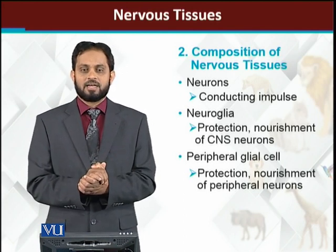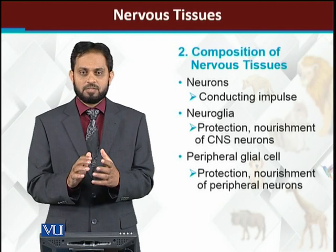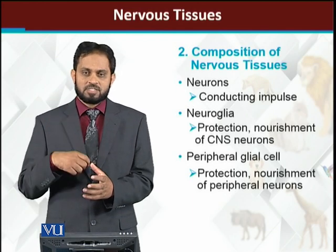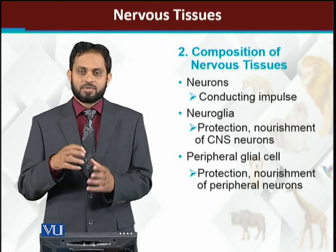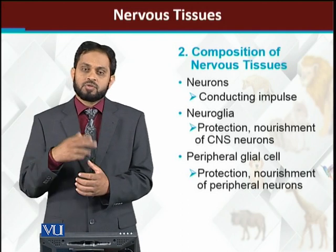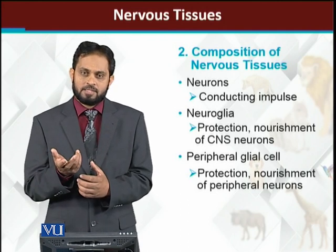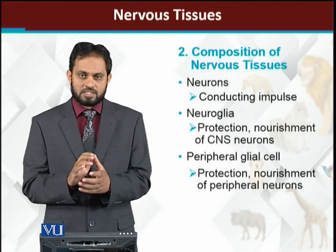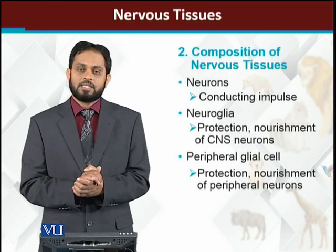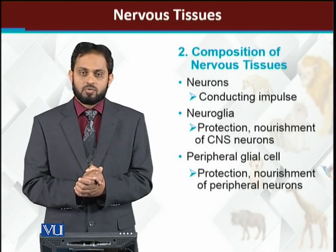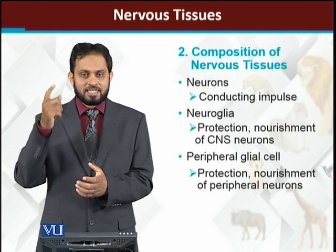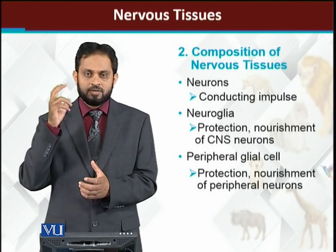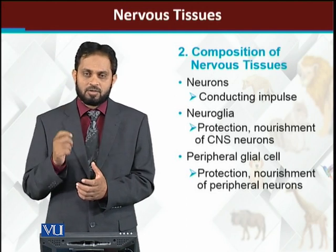Then there are neuroglial cells. Neuroglial cells are those which, within the brain and spinal cord — that is, within the central nervous system — protect and nourish neurons. They provide food to neurons; nourishing and protecting neurons is the job of neuroglial cells. So the central nervous system consists of our brain and spinal cord.